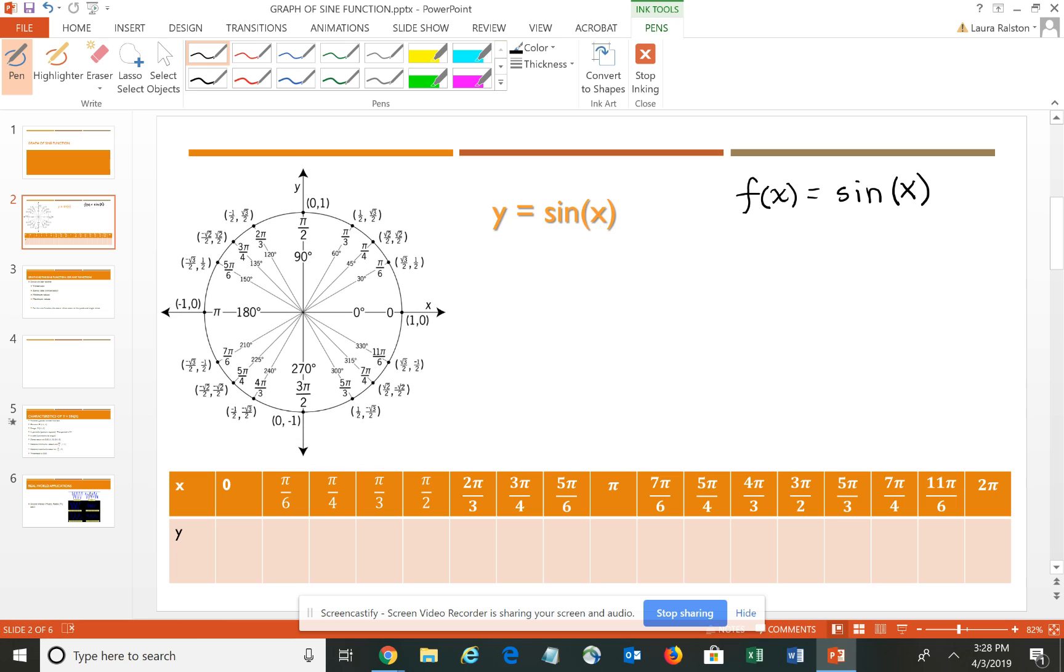Now I didn't want to confuse you just by diving right into it. I want to let you see where the values come from. Our input here, which is the X, is going to be one of the angle measures from the unit circle. Our output is going to be the sine of that angle.